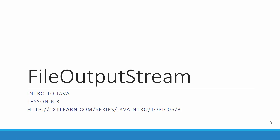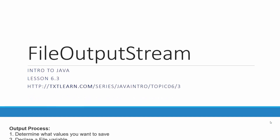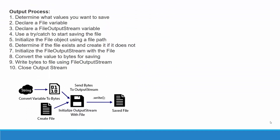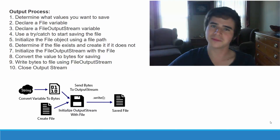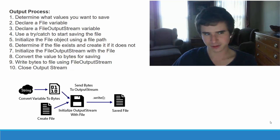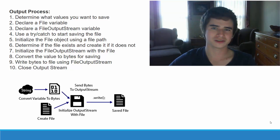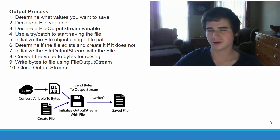Hello, this is Kevin Olson from TextLearn.com, and welcome to lesson 6.3 of the Intro to Java series. In this lesson, we will be discussing the file output stream. The link to the lesson is available in the description for this video. What we're going to be doing in this lesson is using file output streams in order to save information to a file.